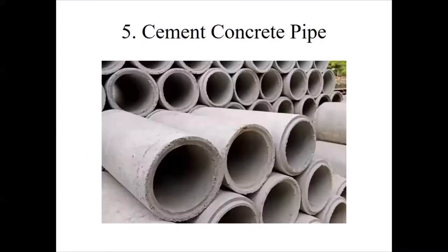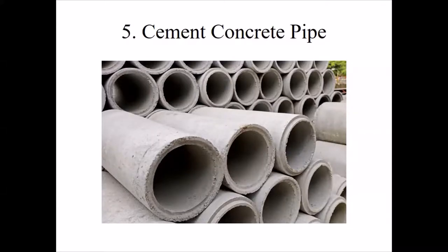Precast cement concrete pipes are manufactured in a rolling mill and transported to the site as required. They may be made of plain concrete, reinforced cement concrete, or prestressed cement concrete. Plain concrete pipes carry water where there is no internal pressure. Reinforced cement concrete pipes are made by reinforcing with steel bars and can withstand high internal pressure.